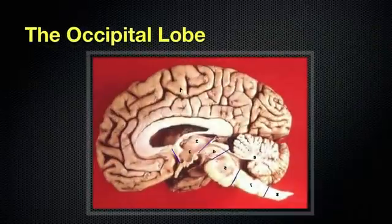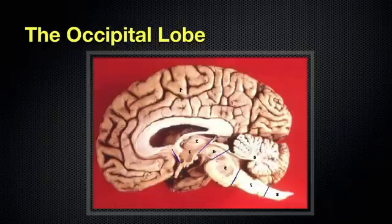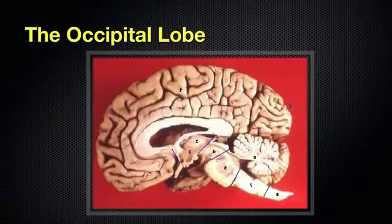Let's look at a mid-sagittal section so we can see the medial aspect of the brain. You can see here — in blue — this area is the occipital lobe. You were just seeing the outside surface, and you can see here that it does extend more medially.